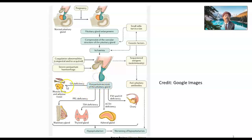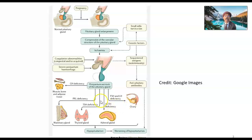In postpartum necrosis, mostly the anterior pituitary is affected. Growth hormone deficiency means muscle, bone, and adipose tissue do not develop properly. Prolactin deficiency is very important — the breast will be atrophied and involuted, and lactation fails. Thyroid stimulating hormone cannot function properly, and ACTH deficiency occurs. Follicle stimulating hormone and luteinizing hormone deficiency leads to menstrual irregularities, vaginal dryness, dyspareunia, and uterine involution. Adrenal gland dysfunction results from ACTH loss, and TSH deficiency leads to hypothyroidism.